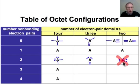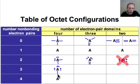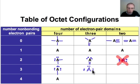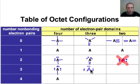Moving to the next row, we have 3 non-bonding pairs of electrons, and the way we get to an octet is with a single bond. Once again, if we try to get to an octet constrained to 3 non-bonding pairs of electrons with only 2 electron pair domains, we run out of electron pair domains and still don't have an octet — the same impossible situation as before.